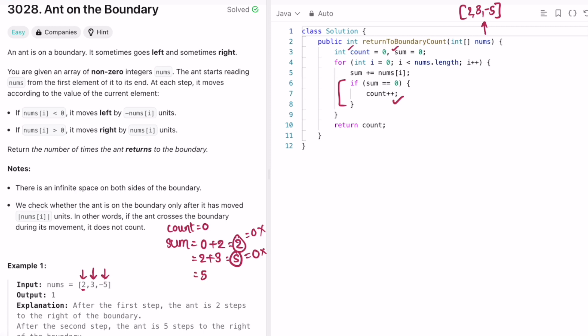Next element the current sum is five and we add minus five to it and sum becomes zero. We check if this sum is equal to zero. Yes. So increment count. Count will be incremented by one and count is one and we reach the end of the array.